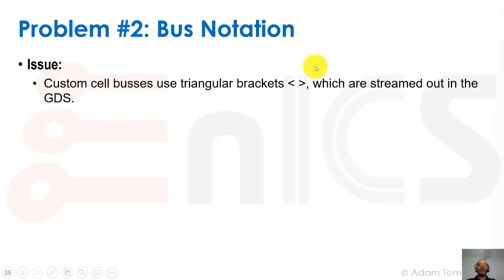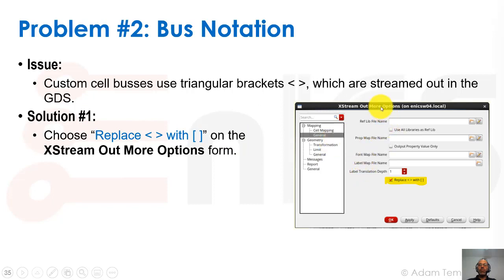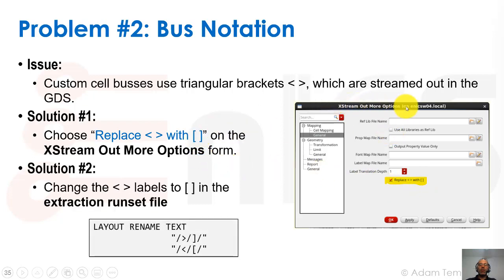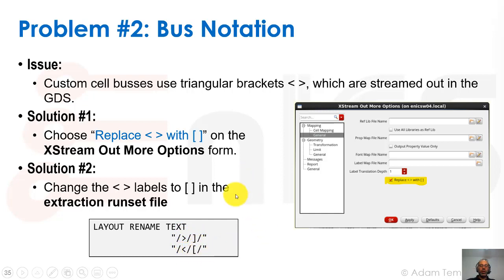Problem number two: bus notation. Custom cell buses use triangular brackets, which are streamed out in the GDS. Solution one is in the stream-out options — under General, there's a button that says 'replace triangular brackets with square brackets', giving us square brackets in the layout. If an IP provider didn't check that and gave us triangular brackets, we can handle it in the run set file of the extraction tool in Calibre using layout rename text with regular expressions to replace triangular brackets with square brackets.